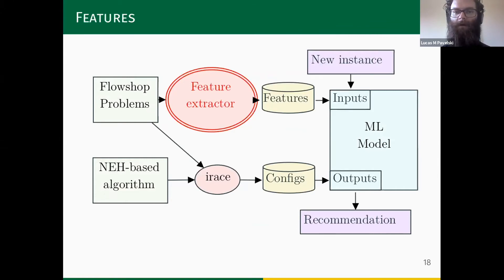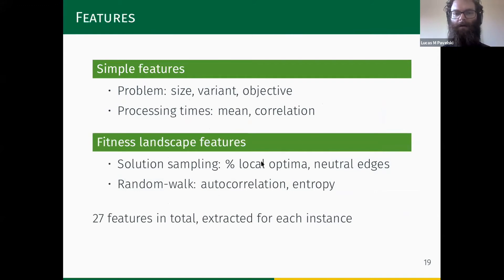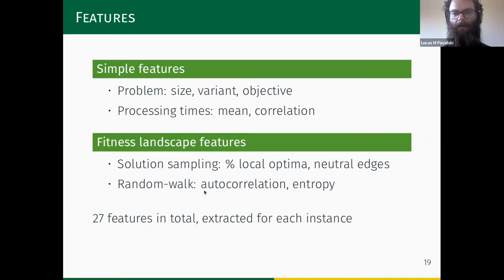For feature extraction we use different problem features. Some are extracted from the problem formulation itself: problem size (number of jobs and machines), problem variant, and objective. Some are statistics of the processing times like mean and correlation. Others are computed from the fitness landscape, such as the proportion of local optima and neutral edges. Others involve sampling from a random walk, with metrics like autocorrelation and entropy. In total there are 27 features extracted per instance.